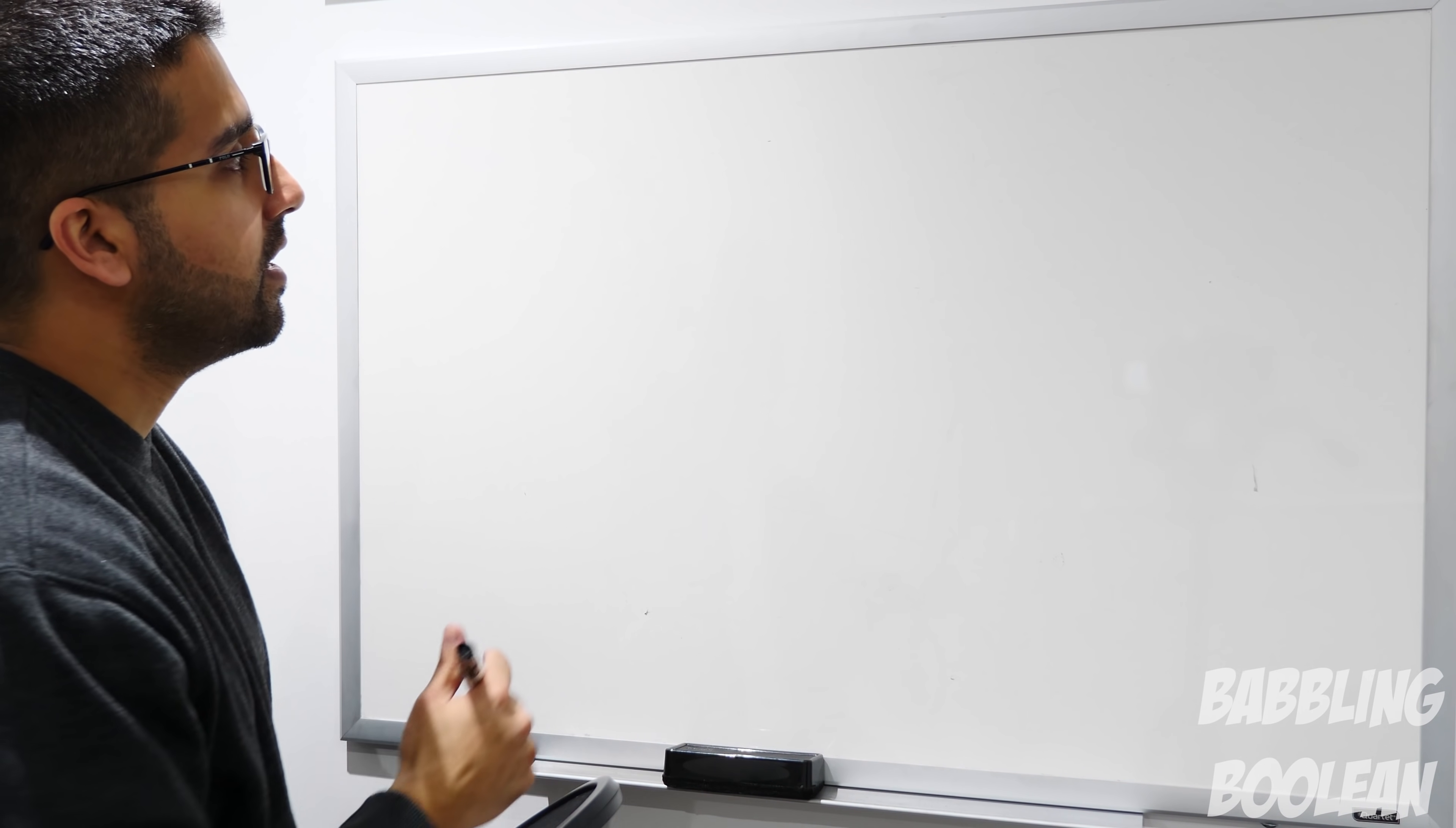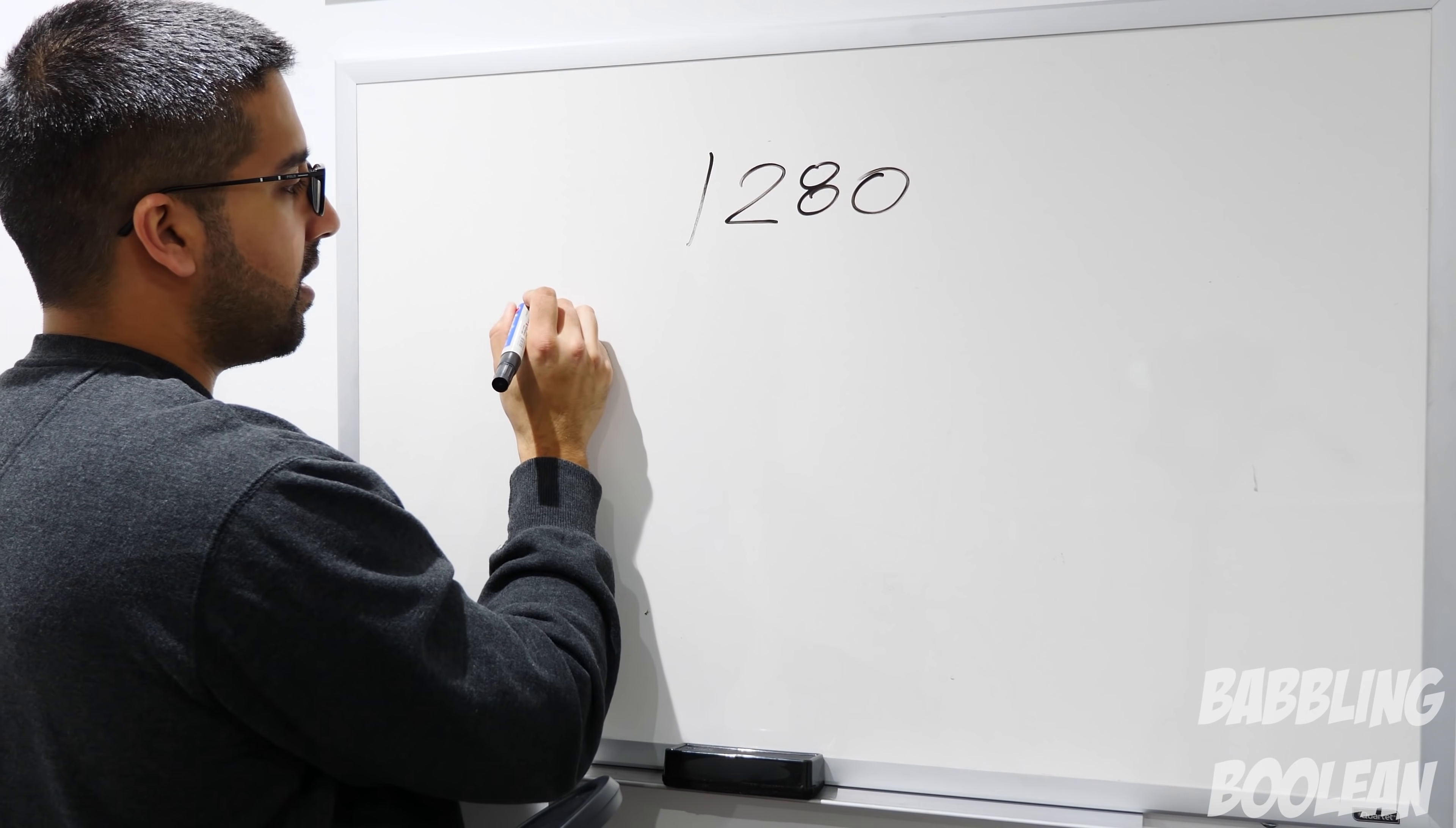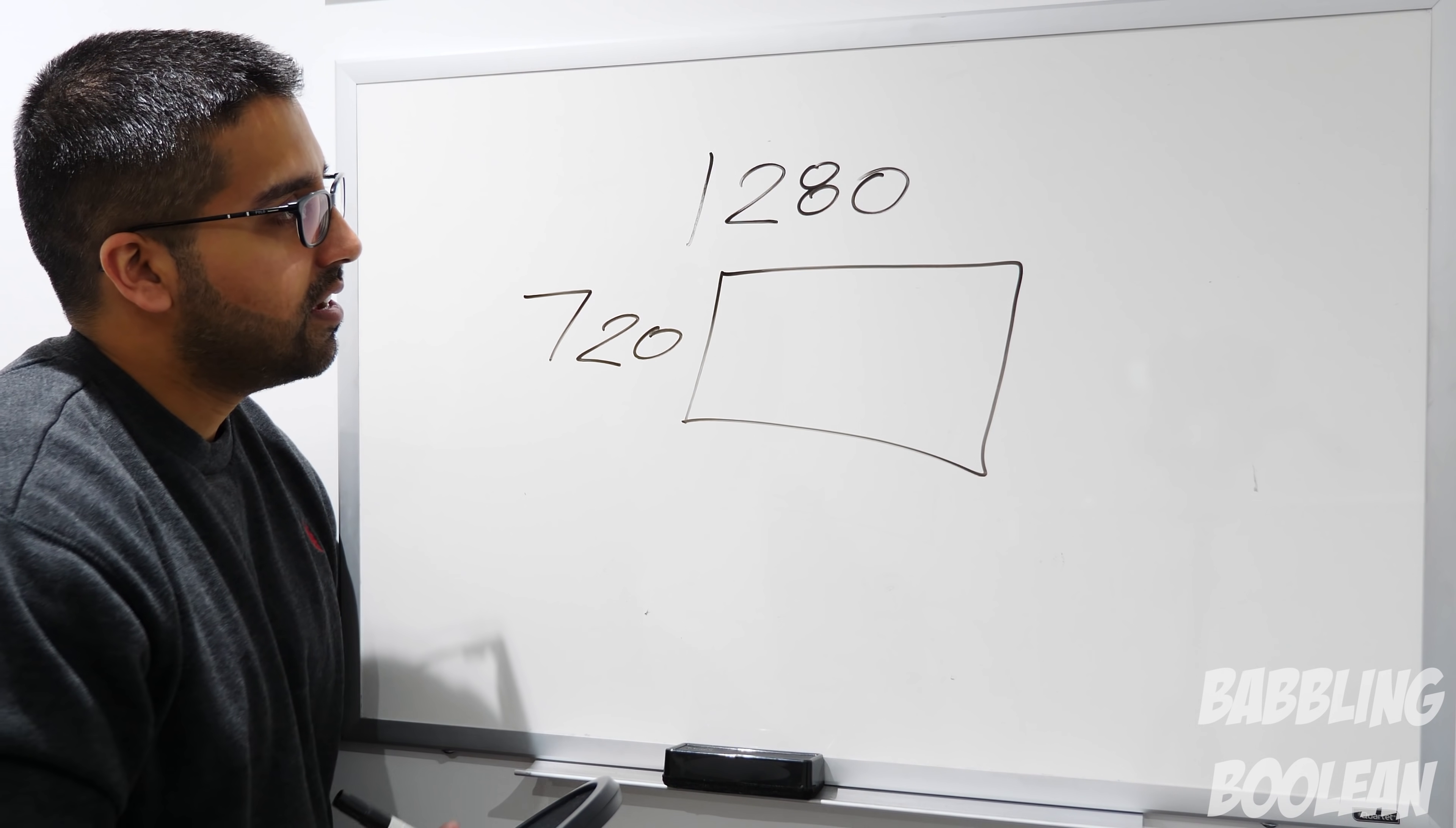720p, which is the first standard of HD, has a resolution of 1280 by 720. So we'll take a TV, doesn't matter what size, we don't care. This is our 720p TV.